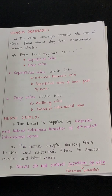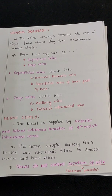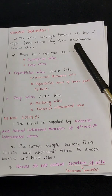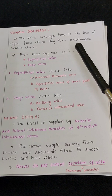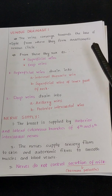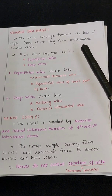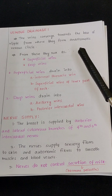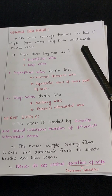Now let's move on to the venous drainage. The veins converge towards the base of the nipple, from where they form an anastomotic venous circle. So an anastomotic venous circle is formed towards the base of the nipple.